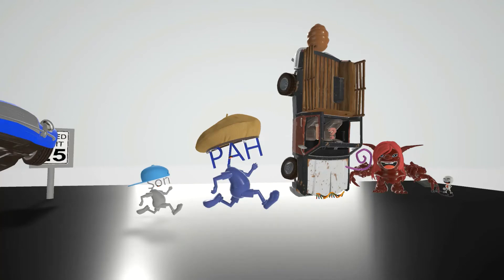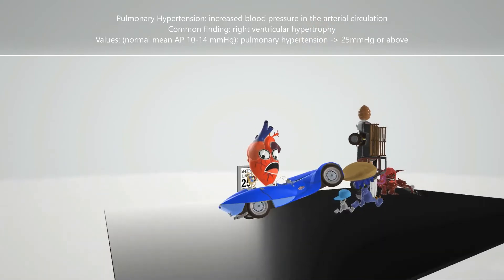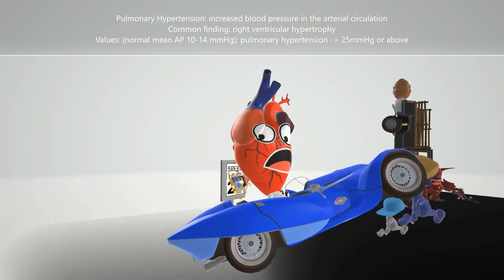Before we talk about pulmonary arterial hypertension, let's have a word about pulmonary hypertension. Pulmonary hypertension is when there's increased blood pressure in the pulmonary circulation. This can be due to various things, but one common finding is right ventricular hypertrophy, represented by this heart over here with hypertrophy in the right ventricle.